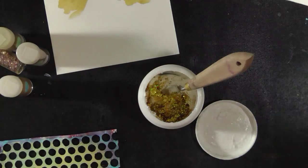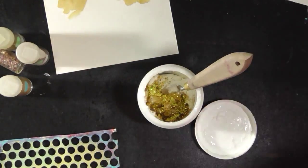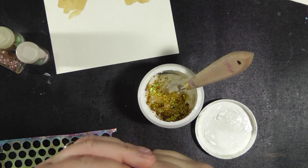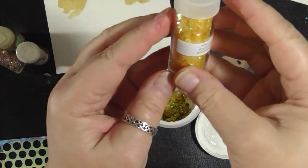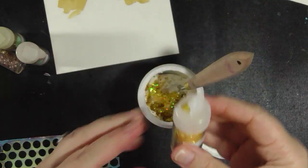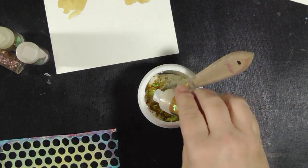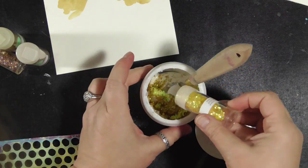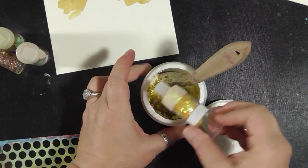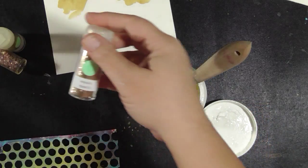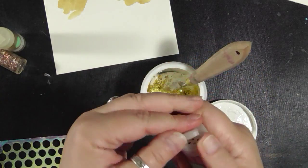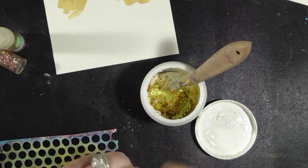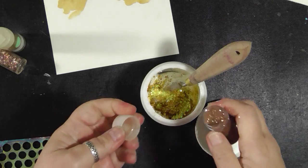Then I have some Martha Stewart glitter. This is lemon drop - dump a bunch of that in there. And then this one is smoky quartz. The lemon drop was kind of a large flaky glitter; the smoky quartz is more of a fine to super fine glitter, really really small.